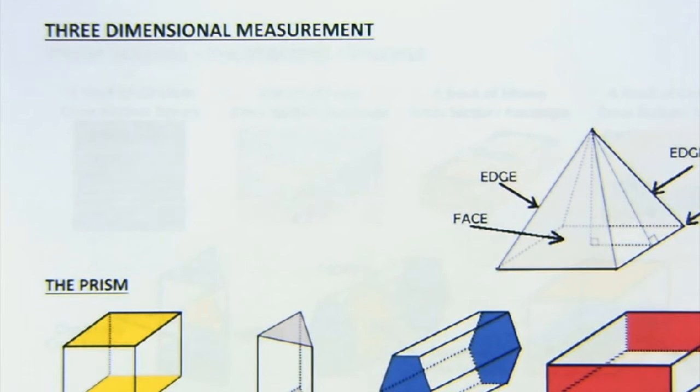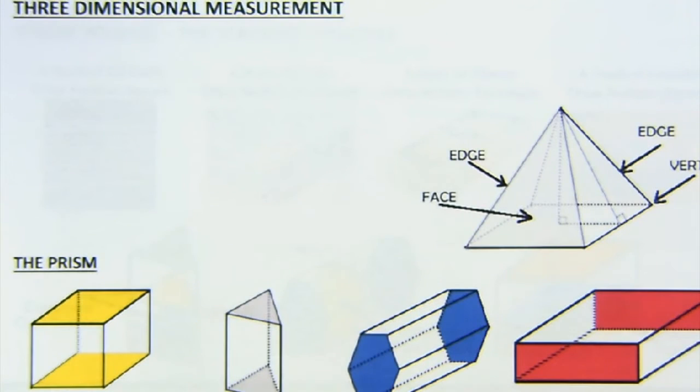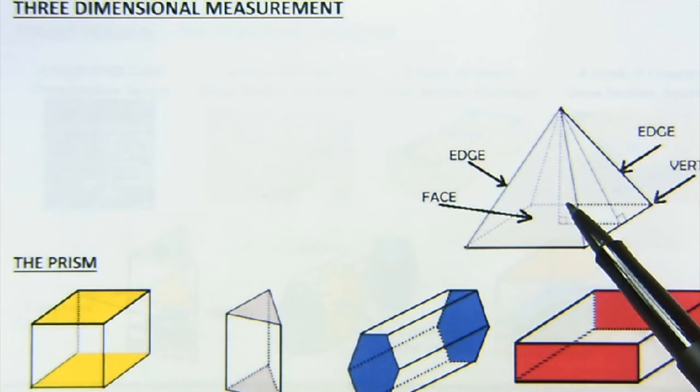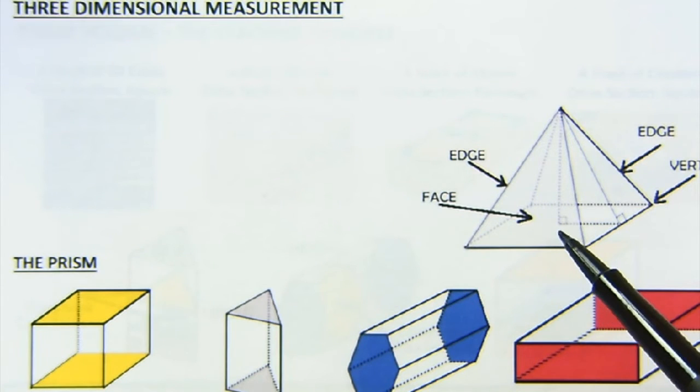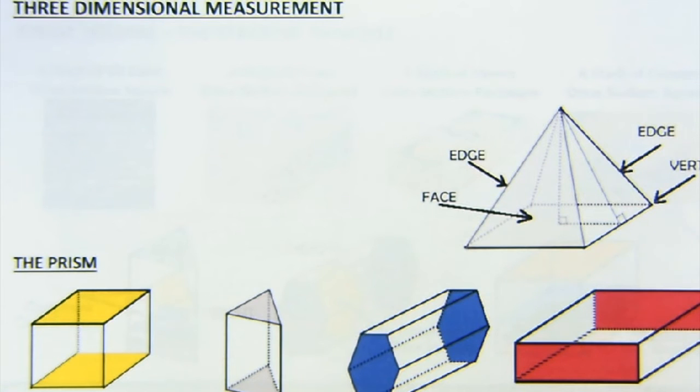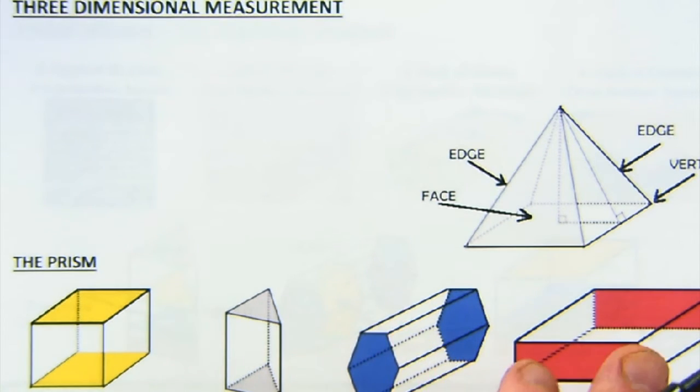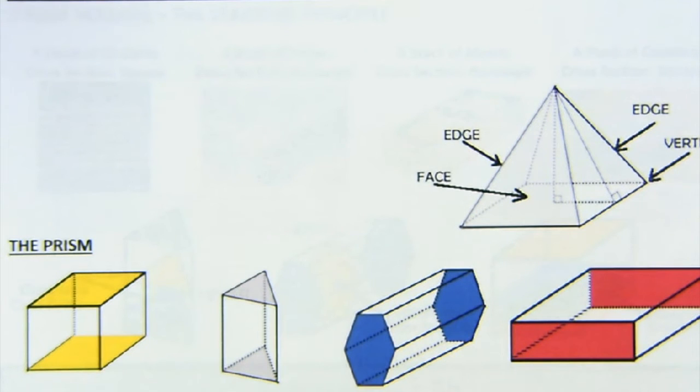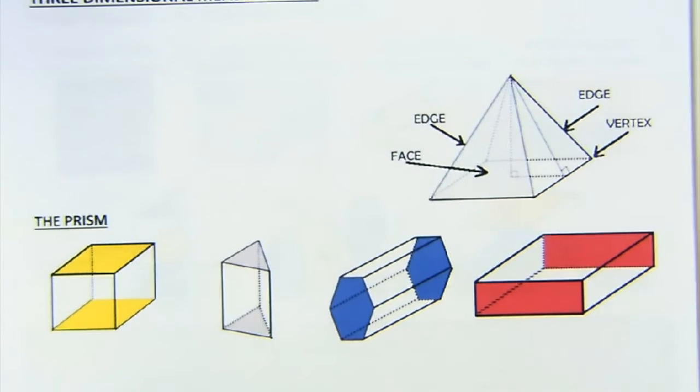All right, as we introduce this whole idea of three-dimensional measurement that moves into the world of volume, let's get used to some language. We talk about faces, not necessarily sides, for three-dimensional objects. You've got edges where two faces meet. A vertex is where edges intersect.